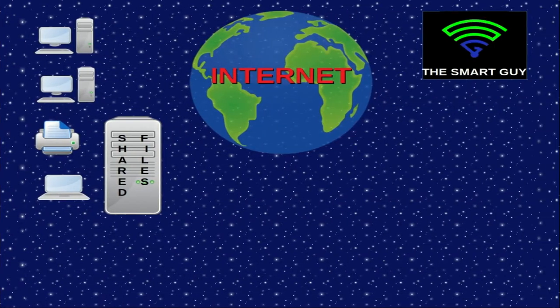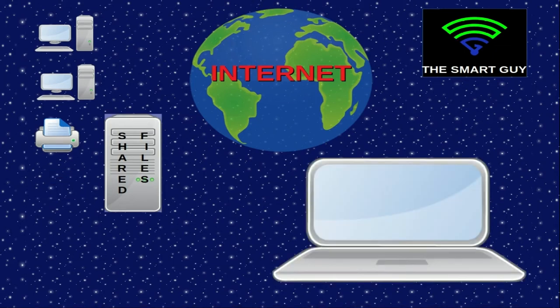We'll start with a VPN. Normally when you're at work you have an office environment where you have several computers and printers all connected to each other through your network. VPN usually works best for something like a laptop where you take it home and then you try to connect from there.